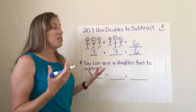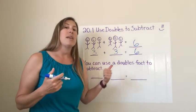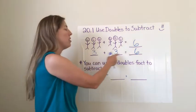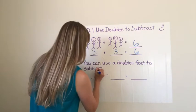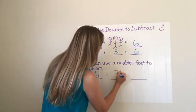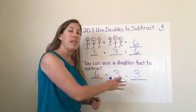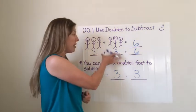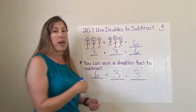Now what I want to do today is I want to use what I know with doubles to create subtraction sentences. So if I know three plus three is six then I also know six take away three will equal three. There's a relationship between these three numbers. This doubles problem can be reversed into a subtraction problem.